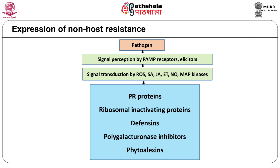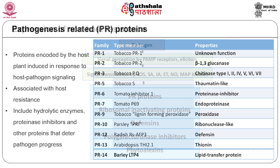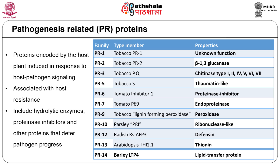The host-pathogen signaling mechanisms lead to the expression of genes coding for proteins that play a role in resistance. These include PR proteins, which include enzymes responsible for hydrolysis of pathogen cell walls, ribosomal inactivating proteins, defensins, and enzymes involved in the biosynthesis of protective chemicals called phytoalexins. Pathogenesis-related (PR) proteins are proteins expressed in response to pathological or related conditions. They include different hydrolytic enzymes like glucanases and chitinases, ribonucleases, protein inhibitors, enzymes involved in reactive oxygen species metabolism, as well as small peptides like thionins and defensins. Some of the PR proteins are shown in the table. These proteins play a role in impeding pathogen progress in the plant and hence are associated with the expression of resistance.